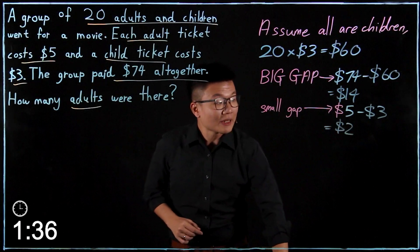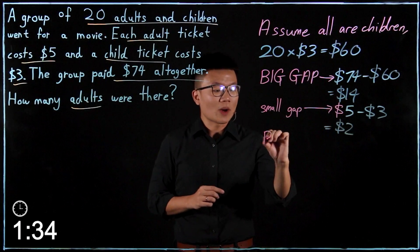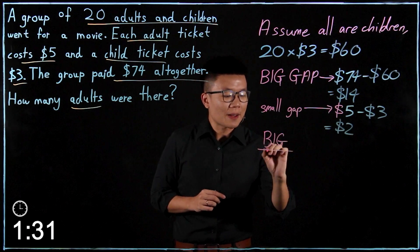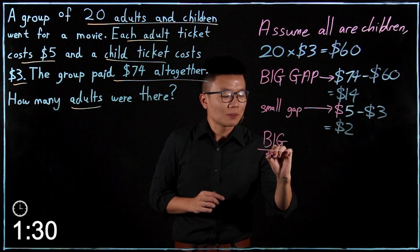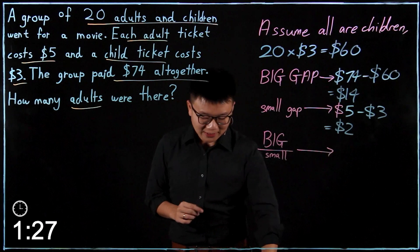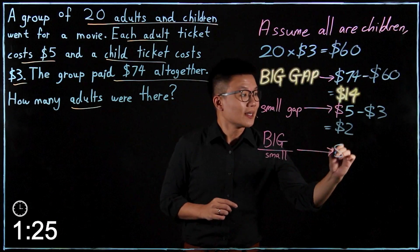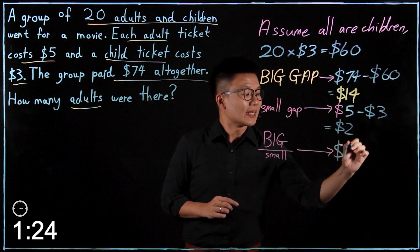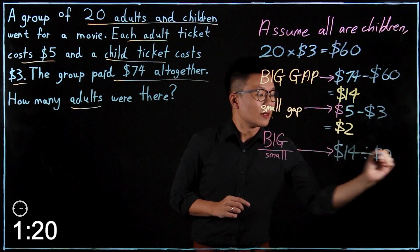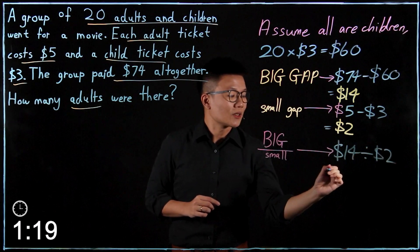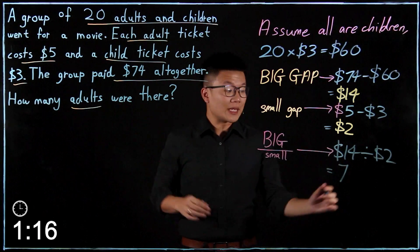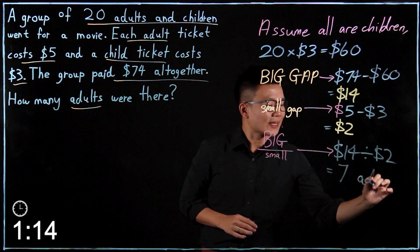Next, the big gap is made up of many small gaps. So what we are going to do is take the big gap and divide by the small gap. $14 divided by $2 gives us 7. So this 7 means 7 adults.